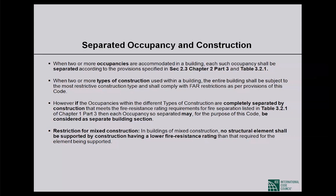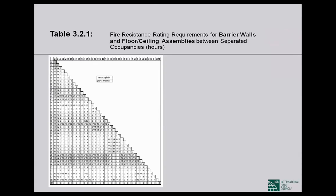Detached occupancy is when a building is separated by distance within the same plot to accommodate different types of occupancies. Here we separate different building blocks through distance rather than material or fire resistance requirements. This can be done within the same plot as happens in many complexes or campuses.